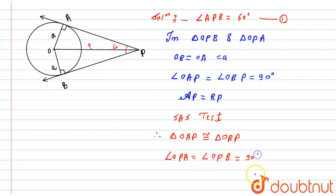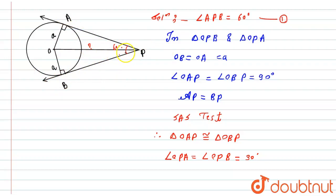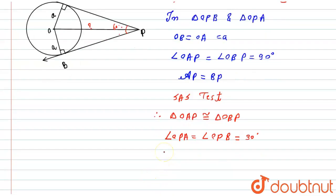Each of these angles is 30 degrees. This is because the angle between the two tangents, angle APB, is 60 degrees. Since angle OPA and angle OPB are equal, angle OPA + angle OPB = angle APB, so both equal 30 degrees.